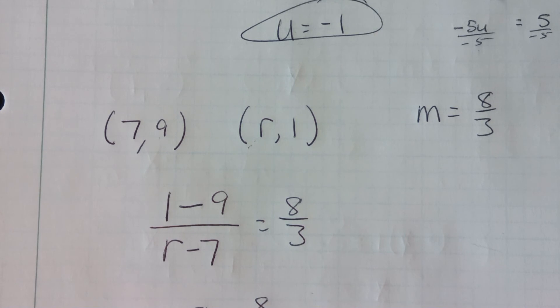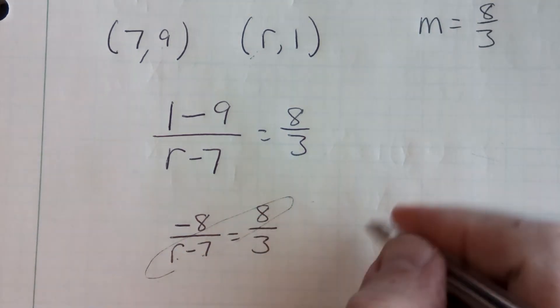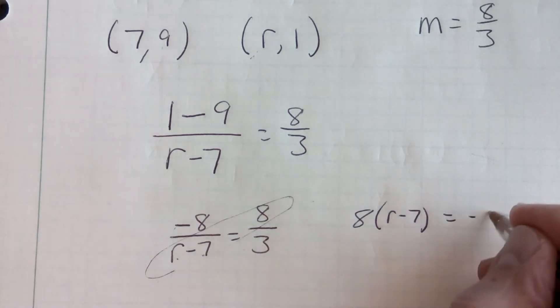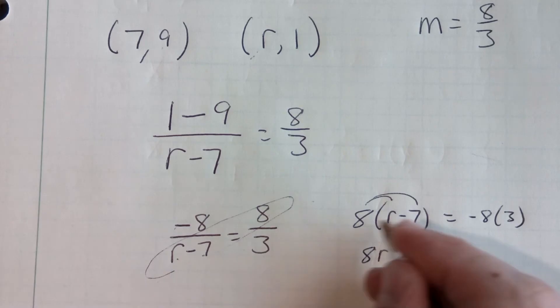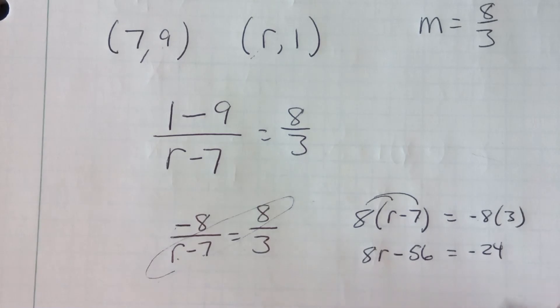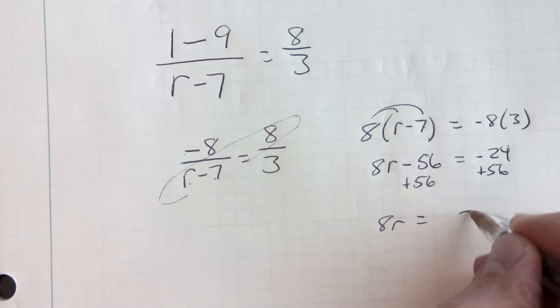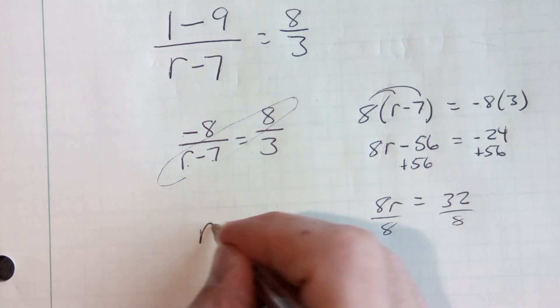Now I'm going to do my cross multiplying. Whoops, you can't see that. I'm sorry. There we go. So I'm going to do the r minus 7 times the 8. So 8 parentheses r minus 7 equals negative 8 times 3, negative 8 times 3. Distributing the 8, we get 8r minus 8 times 7 is going to be 56 equals negative 8 times 3 is negative 24. Add 56 to both sides. We get 8r equals 32, divide by 8, and we find out our r value is 4.